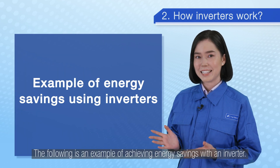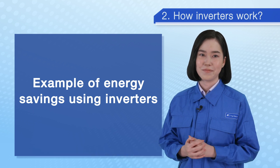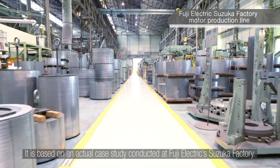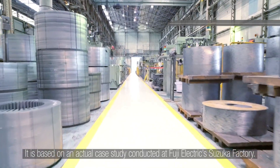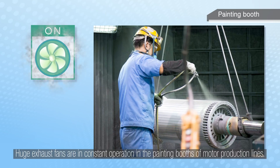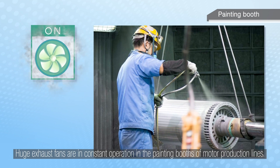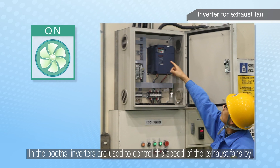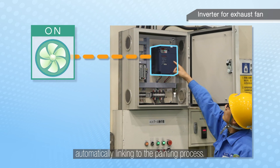The following is an example of achieving energy savings with an inverter, based on an actual case study conducted at Fuji Electric's Suzuka factory. Huge exhaust fans are in constant operation in the painting booths of motor production lines. In the booths, inverters are used to control the speed of the exhaust fans by automatically linking to the painting process.